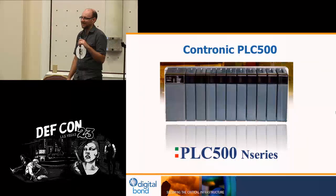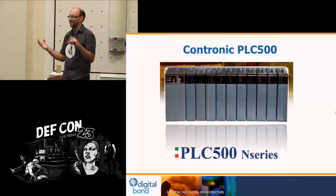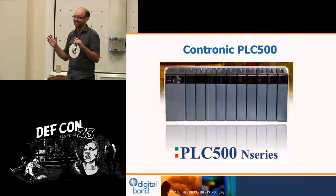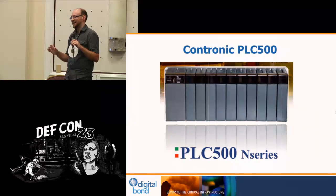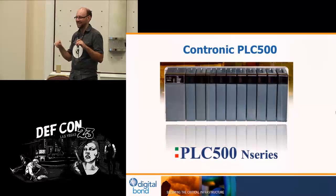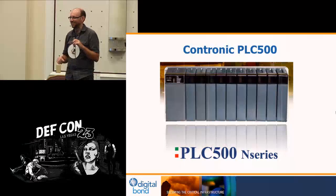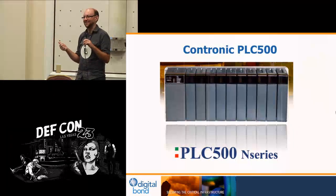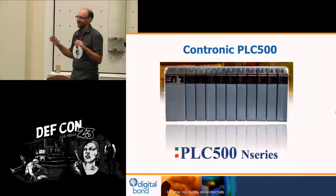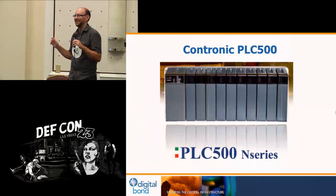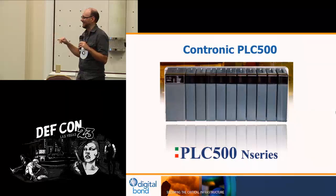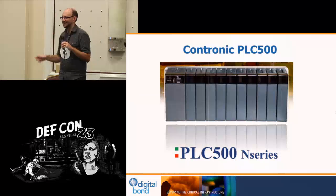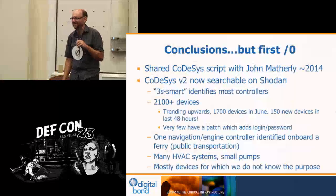I found Proconos-affected vendors by doing open-source intelligence — searching for people's resumes using terms like ABB RTUs with country code .ir, finding people who had installed equipment in Iranian substations. One thing I stumbled on was an indigenous Iranian PLC manufacturer called Contronic. Iran can't buy Siemens PLCs anymore so they've had to start making their own. Their PLC 500 actually runs the Proconos ladder logic runtime, so it was kind of neat to find a vulnerable PLC in Iran without actually visiting the country.